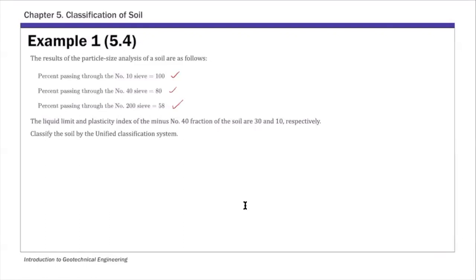And we know the liquid limit and plastic index. So liquid limit PLL and plastic index PI. So that's all the information given. And then we're going to classify the soil using USCS system.